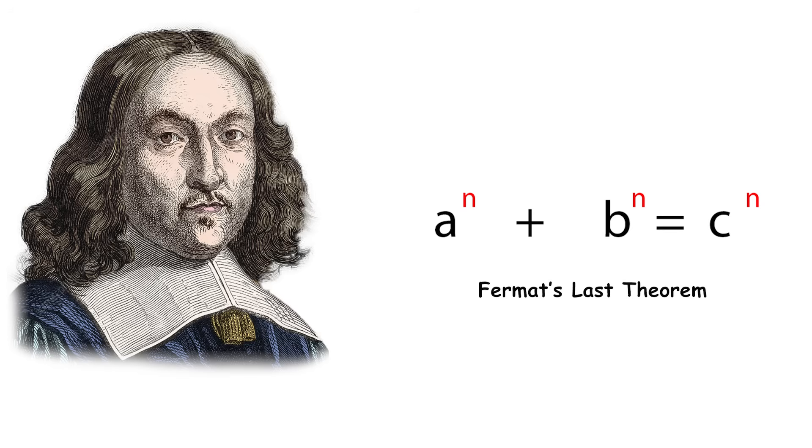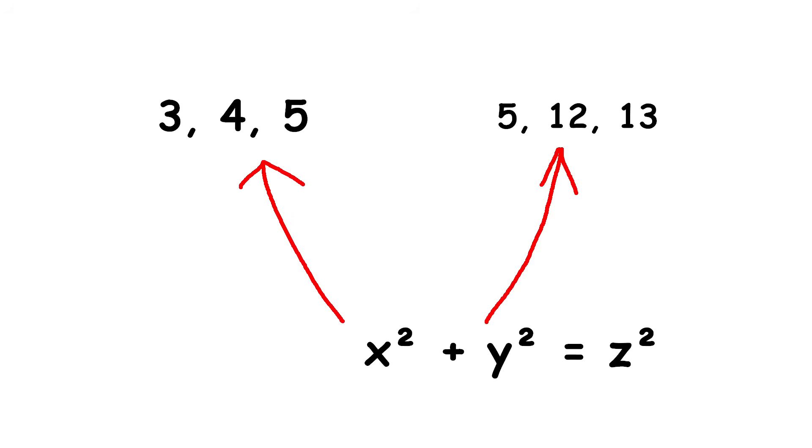One of his most famous claims is called Fermat's Last Theorem. Pretty cool name if you ask me. Fermat's Last Theorem is simple to state. There are many sets of three whole numbers, x, y, z, that satisfy the equation x squared plus y squared equals z squared. These sets are called Pythagorean triples, like 3, 4, 5, and 5, 12, 13.